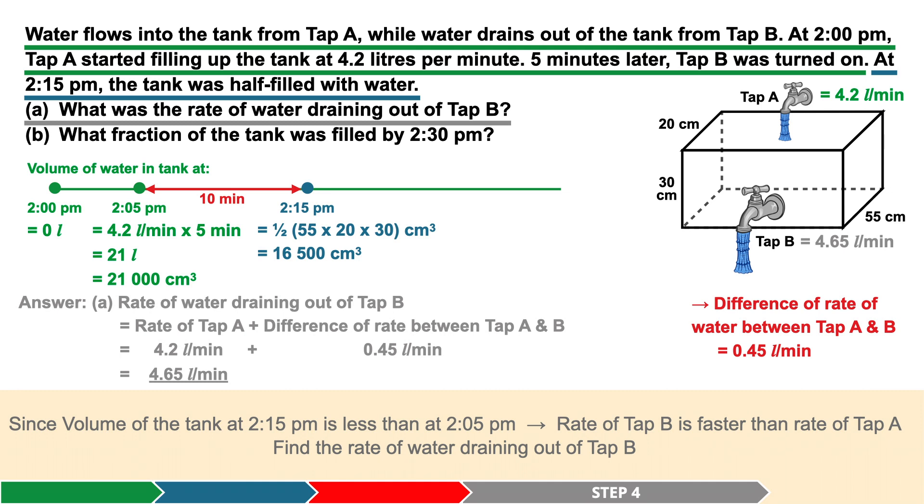So to find the rate of water of tap B, we add the rate of tap A to the difference of the rates between tap A and tap B, which is 4.2 liters per minute plus 0.45 liters per minute, giving us 4.65 liters per minute.